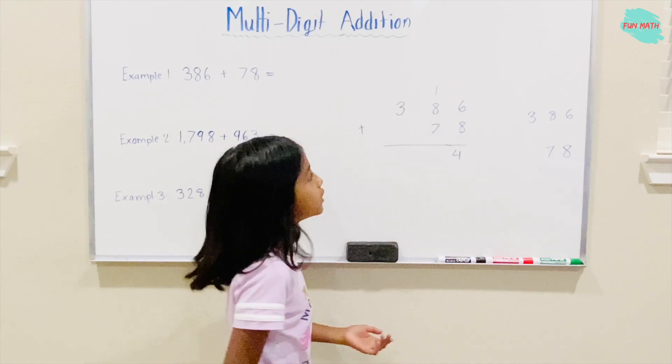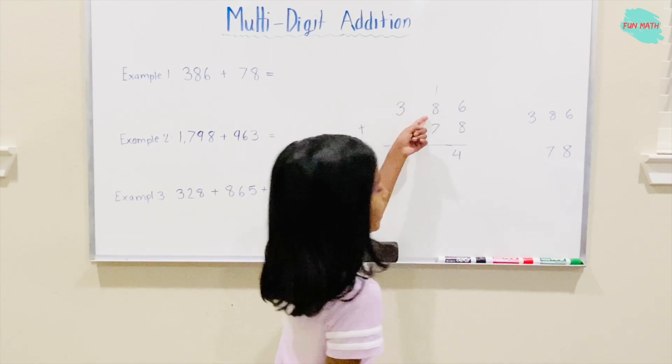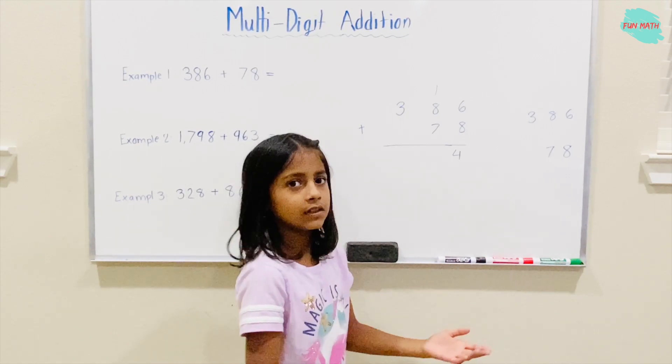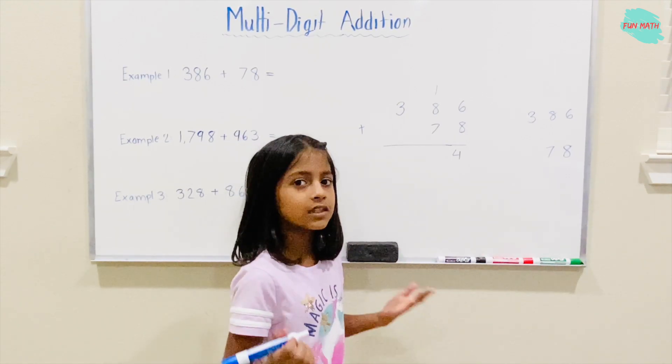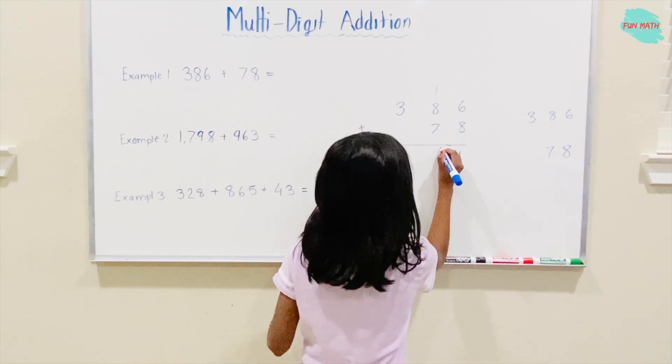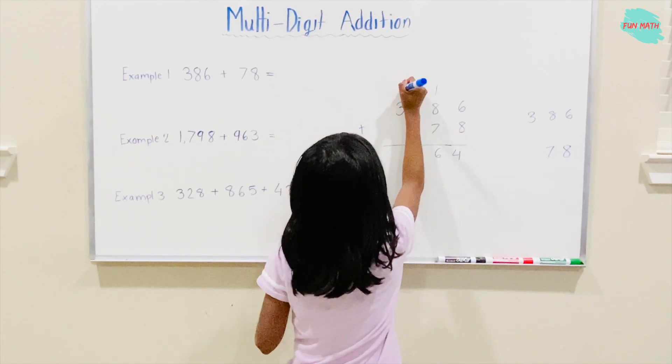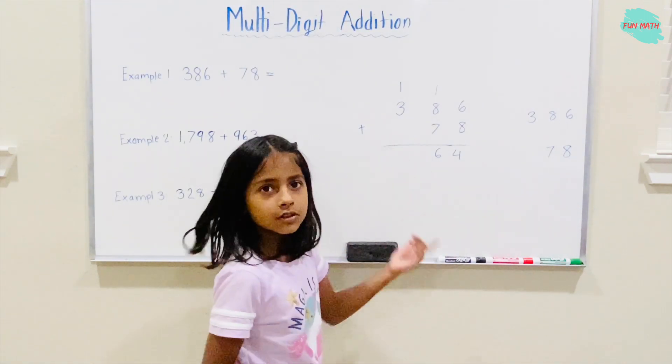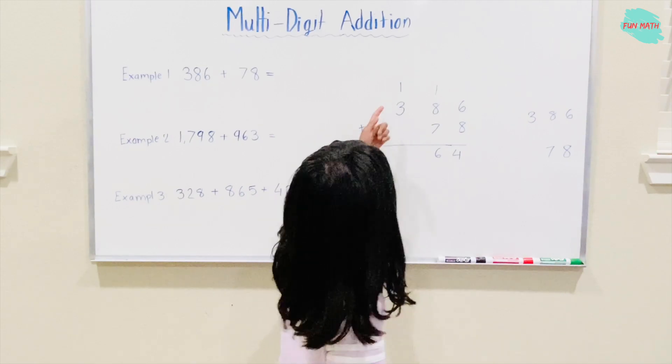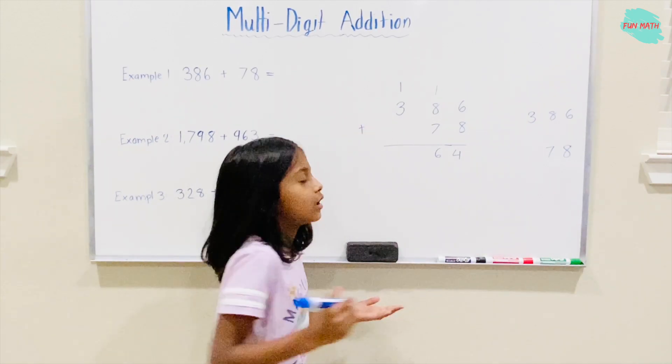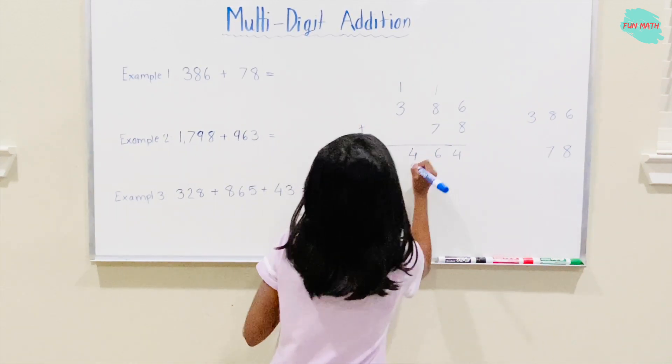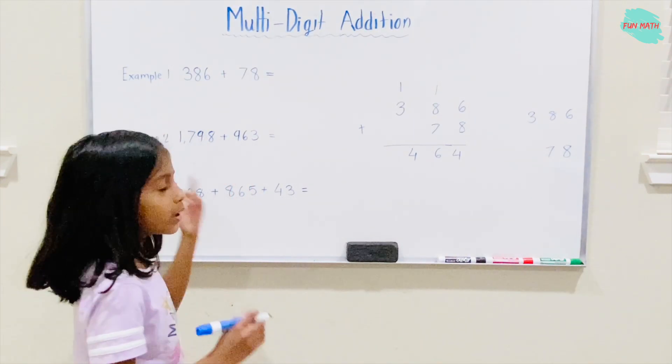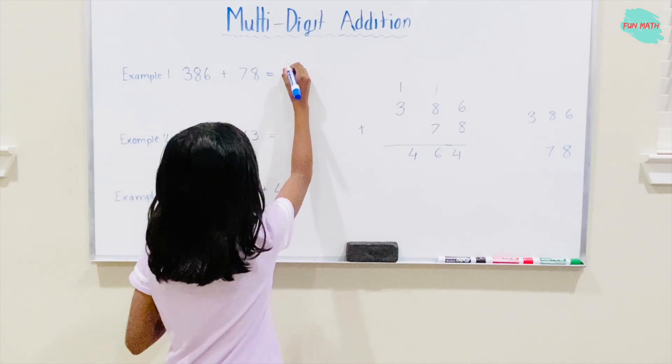And now you can solve. 1 plus 8 is 9. 9 plus 7 is 16. 6 will go under, and 1 will go on top of the 3 and carry it. You just imagine there's a 0 over there. 1 plus 3 is 4. Your answer for Example 1 is 464.